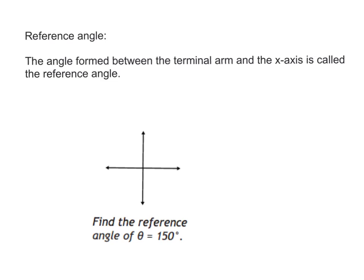And then it says find the reference angle of theta equals 150 degrees. Where would 150 degrees be? Which quadrant would the terminal arm be in? It would be in the second one, right? So it's going to be kind of there-ish, 150 degrees.